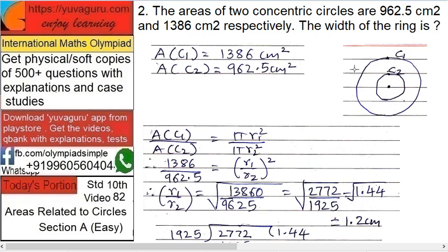These are the two circles, C1 and a smaller one C2. The areas are given: 1386 for the bigger one, 962.5 for the smaller one. Now we want the width.